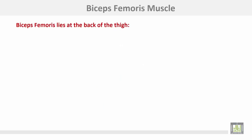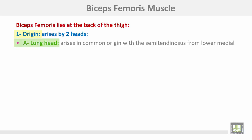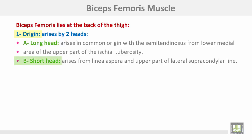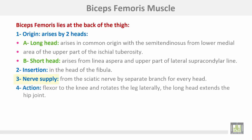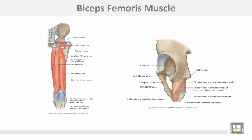Biceps femoris takes origin by two heads. The long head arises in common with semitendinosus from the lower medial area of the upper part of the ischial tuberosity. The short head arises from the linea aspera and the upper part of the lateral supracondylar line. Insertion: head of the fibula. Nerve supply: sciatic nerve with a separate branch for each head. Action: flexor of the knee joint and rotates the leg; the long head also extends the hip joint. This is the long head and the short head inserted into the fibula.